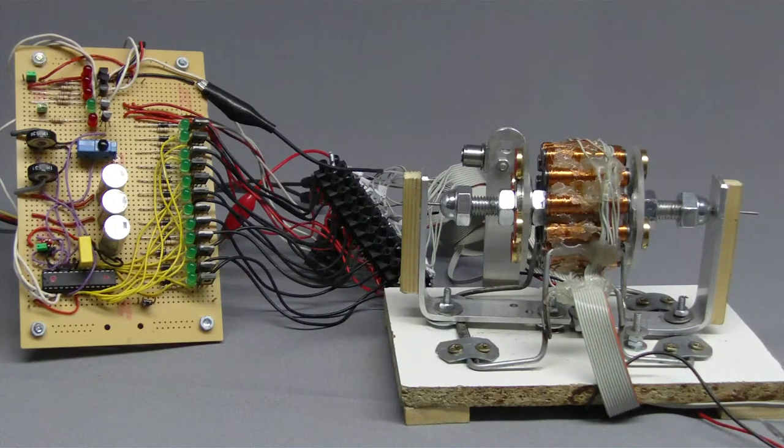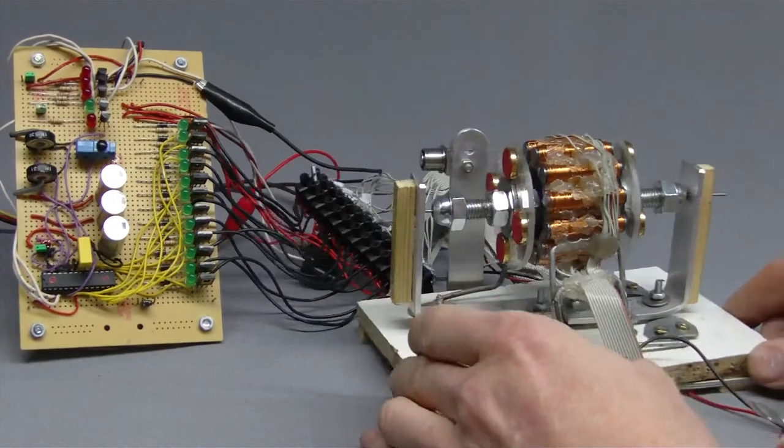Every single electromagnet can be enabled by a transistor. Those transistors are activated by a microprocessor of the Atmel company. It is an Atmega 8A and you can see it at the bottom left of the board.